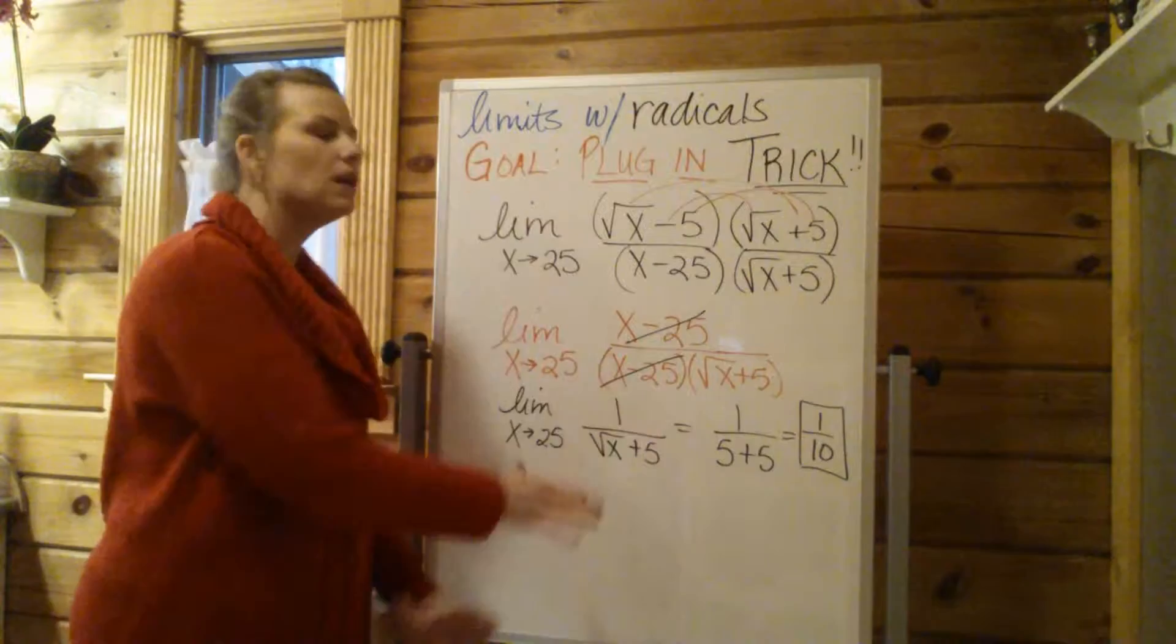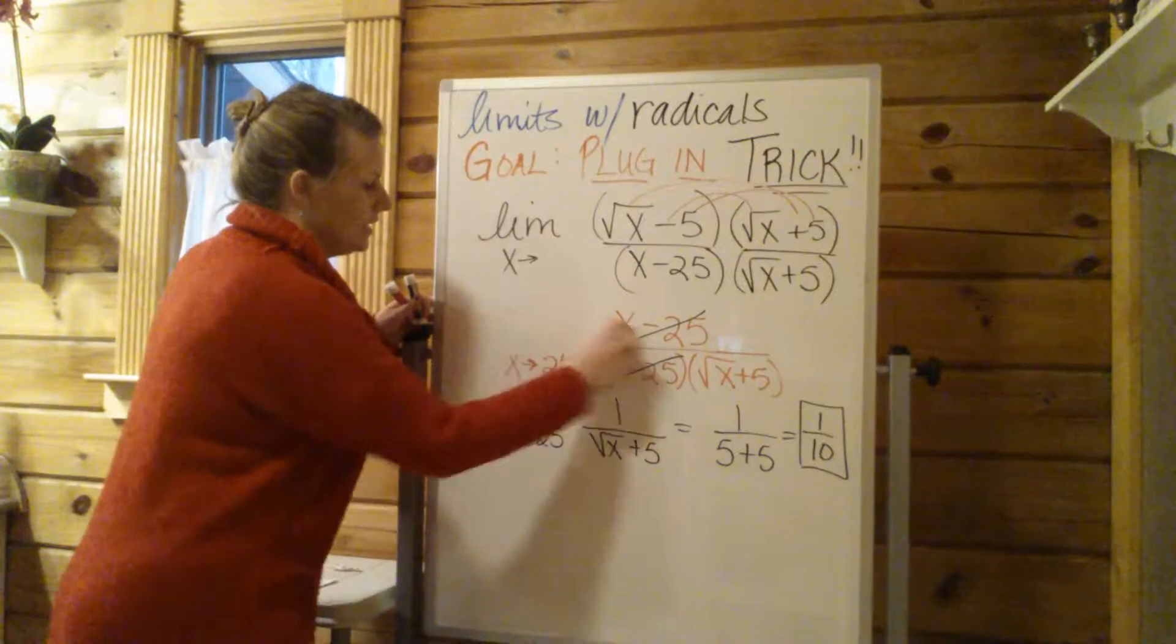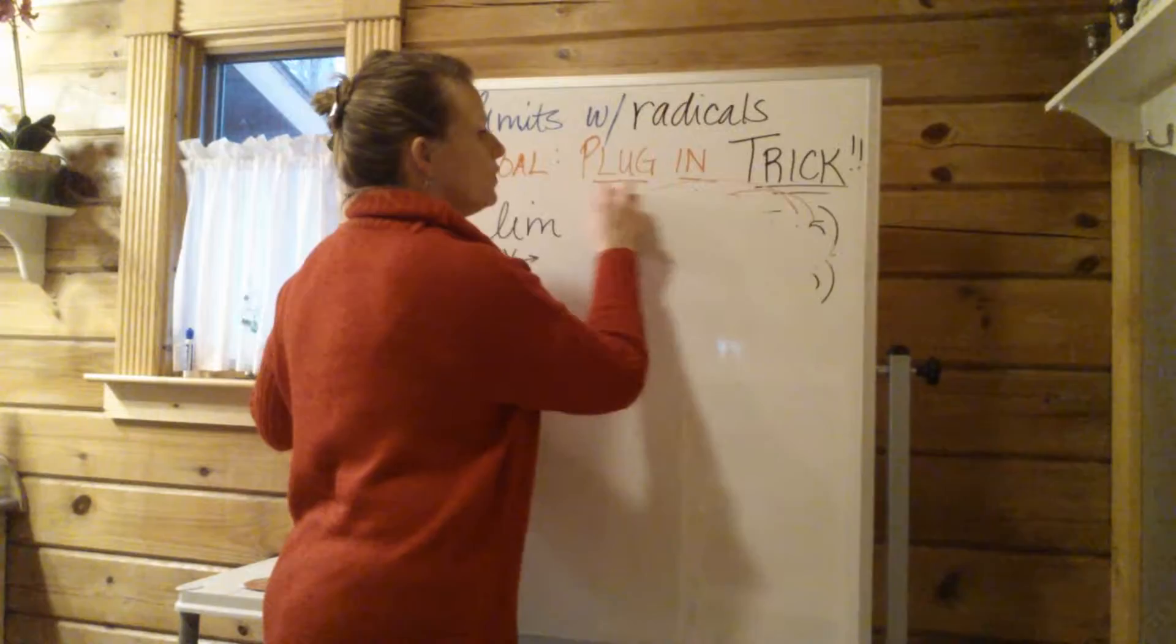So whenever you see a radical with a limit where you want to plug in a number, go ahead and rationalize. A lot of times they'll have you rationalize the numerator. Let's do another one just to kind of hammer that point home.